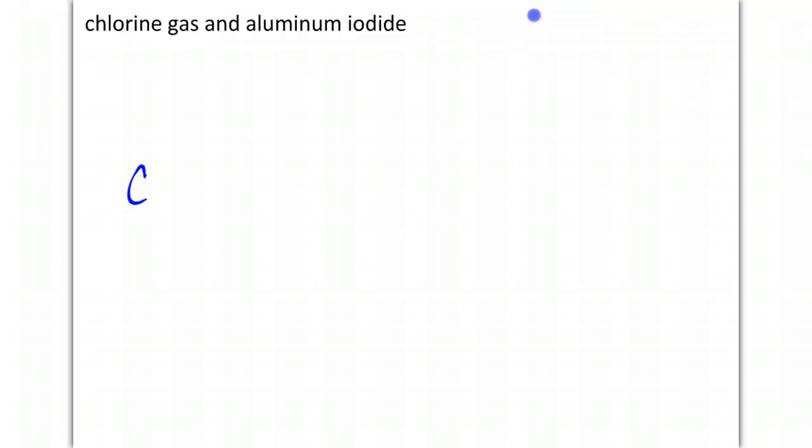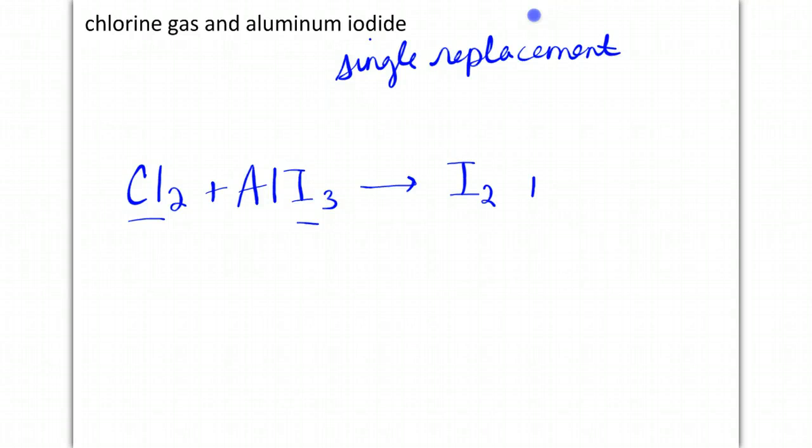The last one is chlorine gas plus aluminum iodide, plus 3, minus 1 switch. Chlorine is a diatomic. And this one is a single replacement, and then this one, it's special, because what's going to switch are my two non-metals, the chlorine and the iodine. So iodine is going to be by itself, and the chlorine is now going to be with the aluminum.